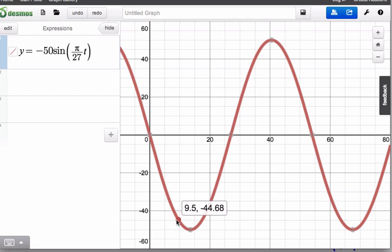You can do this by substitution on your calculator, just putting t equals 9 in, or by drawing the graph on your calculator. And you'll find that the displacement is negative 43.3 minutes. That's that one. So I'm ready.